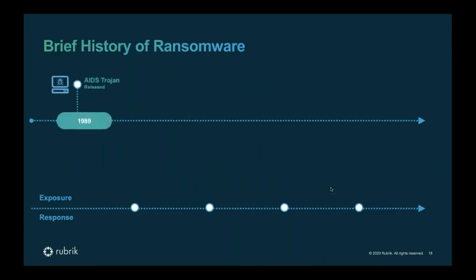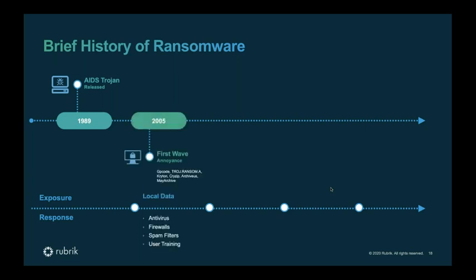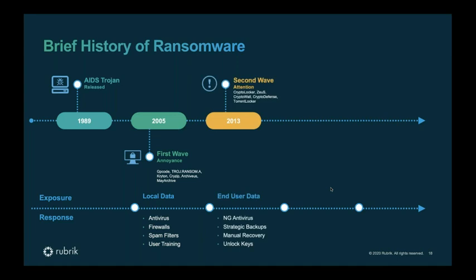Ransomware is not new — it's really been around a long time. The very first version was back in the 1980s with PC AIDS, the first ransomware that took data under hostage. Most people started becoming aware of ransomware in the early 2000s, when it was often defeated through local defenses like antivirus, spam filters, and firewall, and even basic user training. As we got into the early 2010s, the second wave came into fruition — things like CryptoWall and CryptoLocker. Next-generation antivirus, strategic backups, and sometimes manual recoveries were required, though the encryption was still localized enough that recovery and unlock keys could often still be maintained.